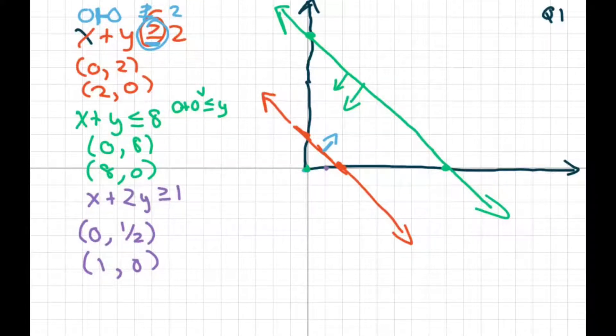So we have 1, 0, 1 comma 0, and 0 comma 1 half, which is right in here. And so I graph that, something like that.